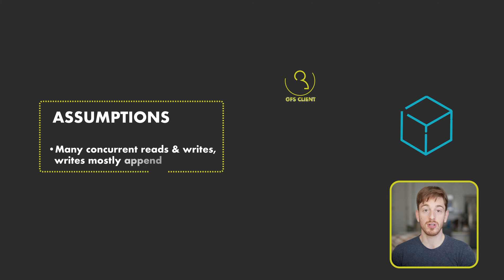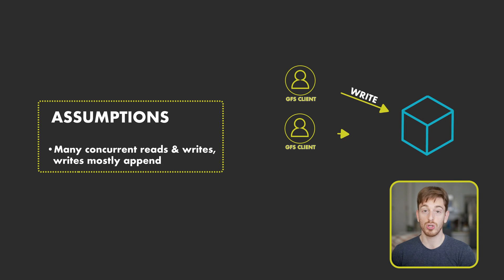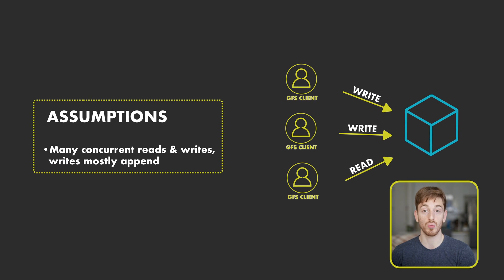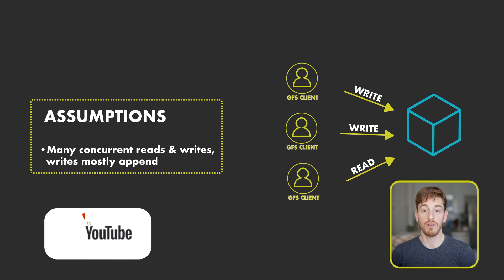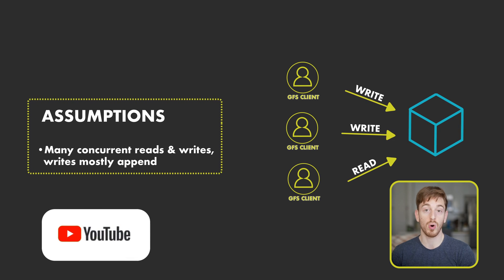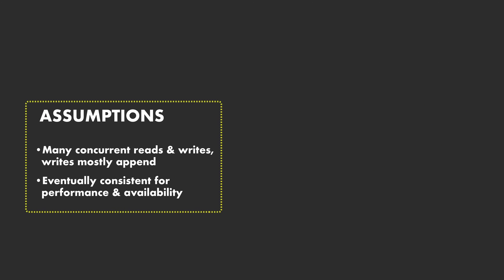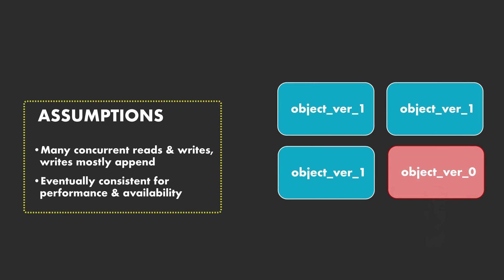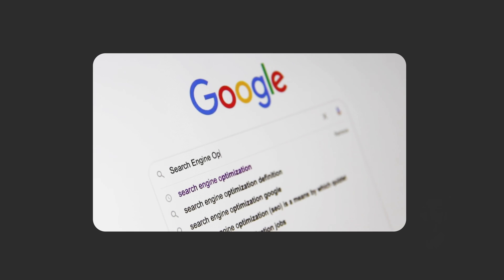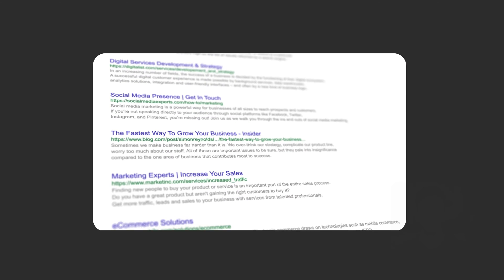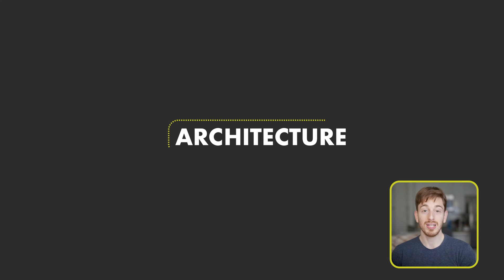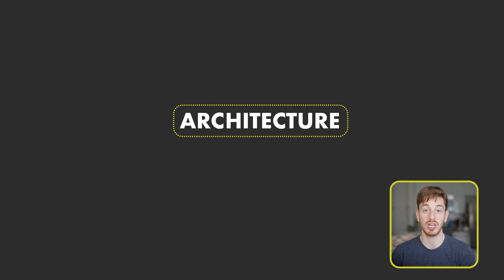GFS assumes that there are many concurrent reads and writes, and that the vast majority of writes are appending or adding bytes to the end of the file instead of overwriting a byte range. For example, videos are often uploaded to YouTube but rarely changed once added. GFS also sacrifices some consistency to optimize for performance and availability — a user searching on Google won't notice if one result out of 20,000 is missing.